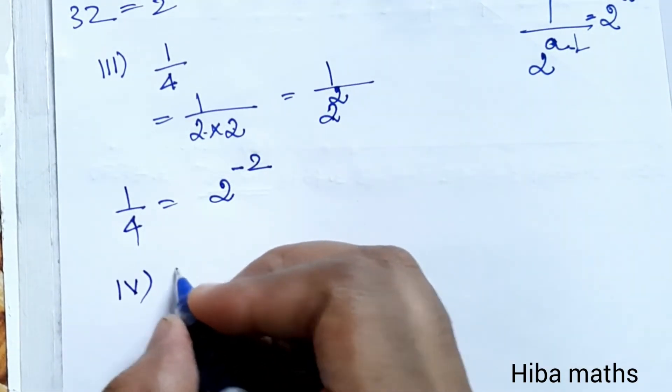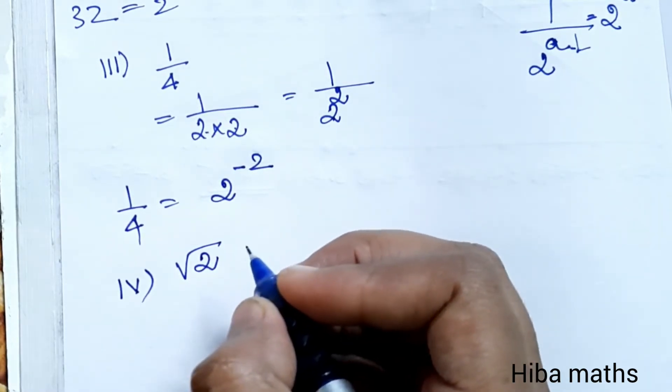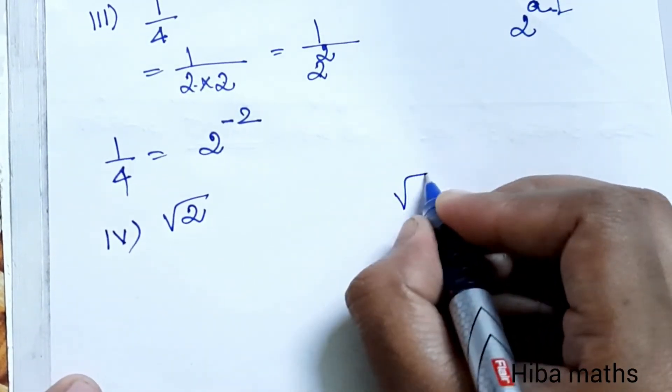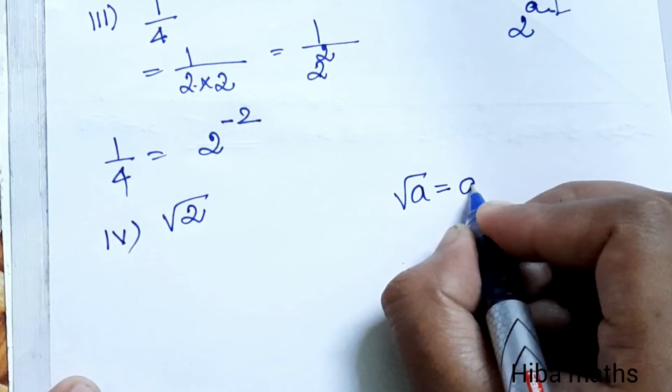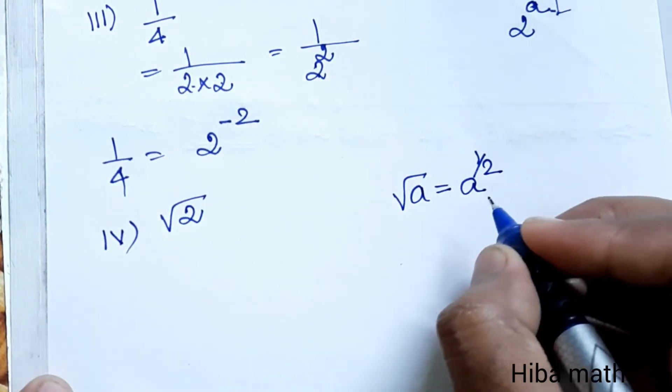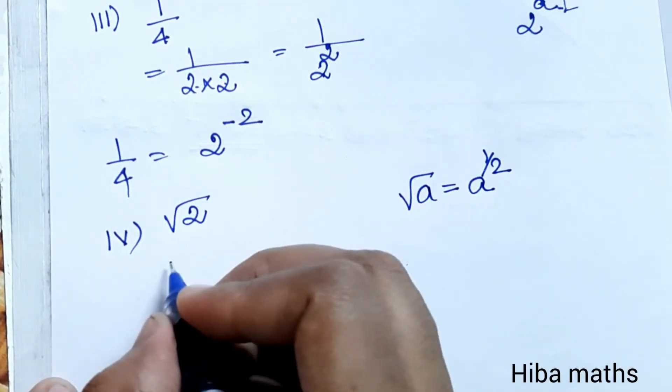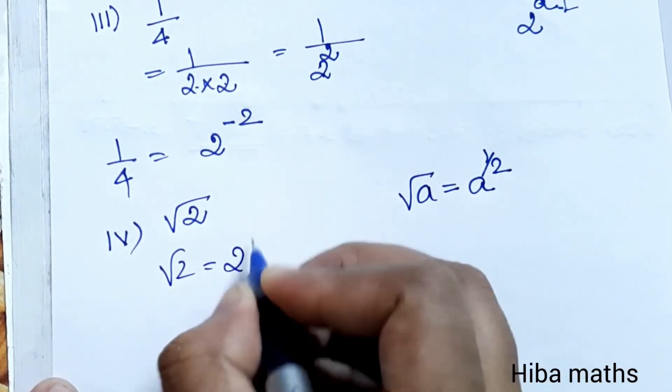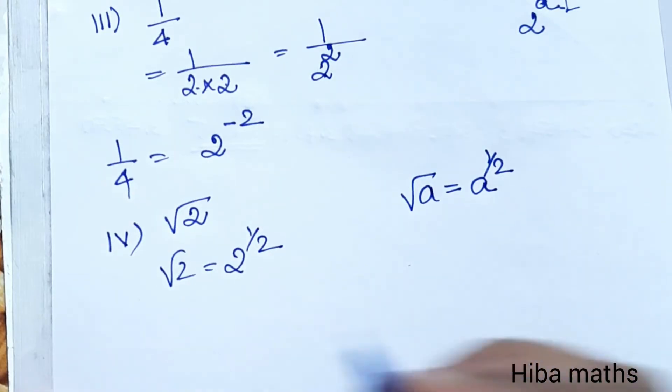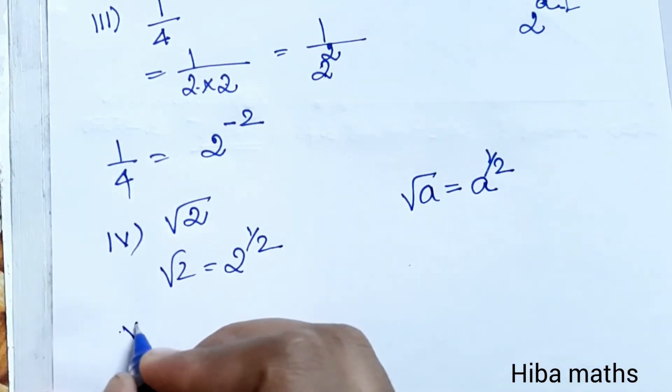Fourth question: √2. The root of a equals a^(1/2). So √2 = 2^(1/2). That's very easy.